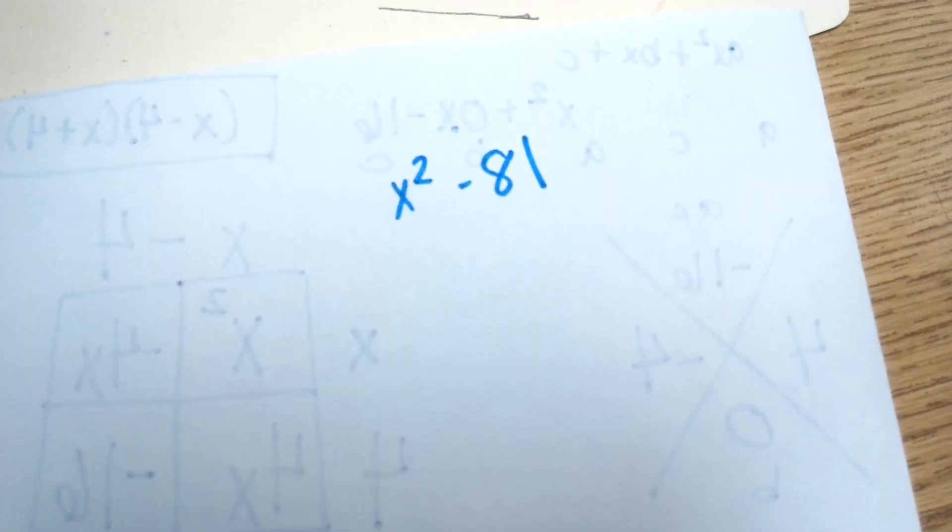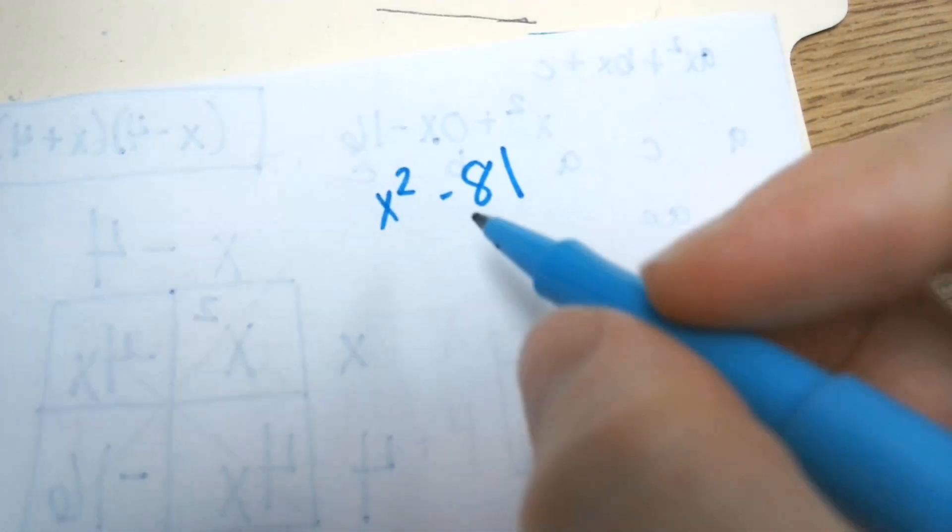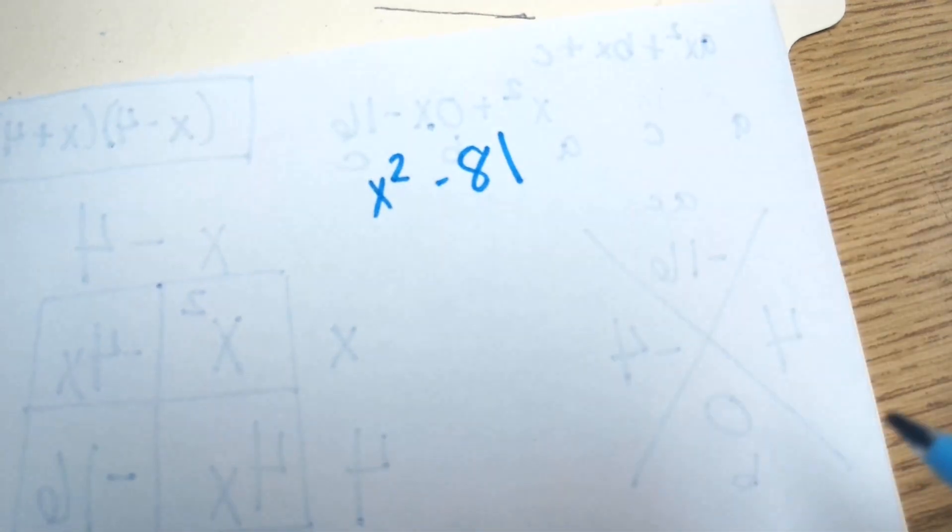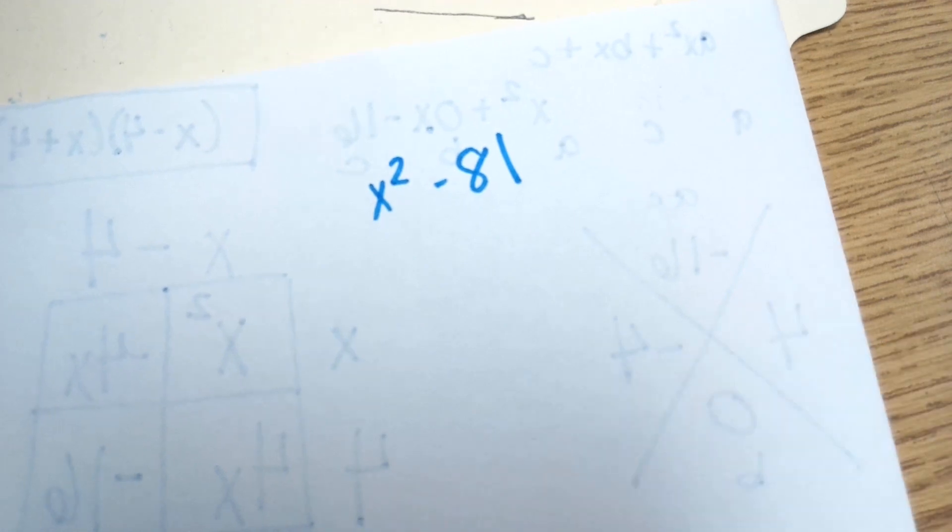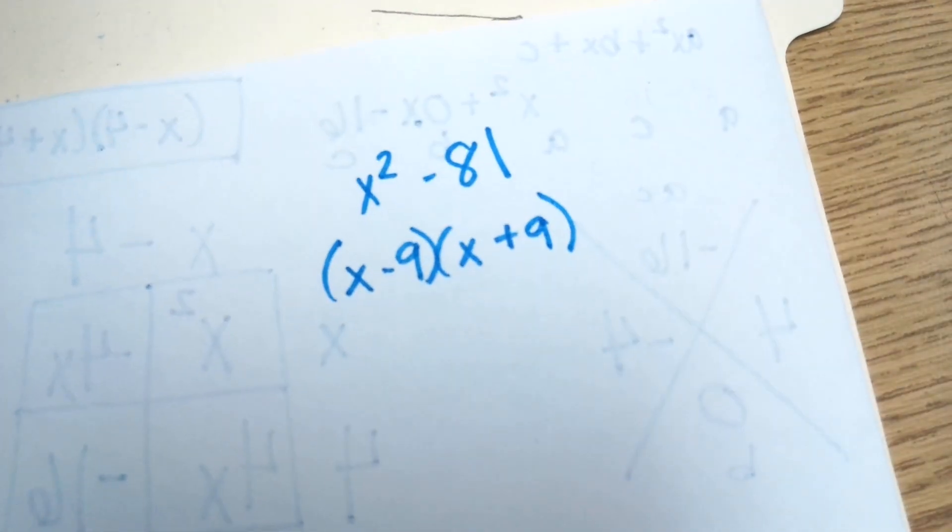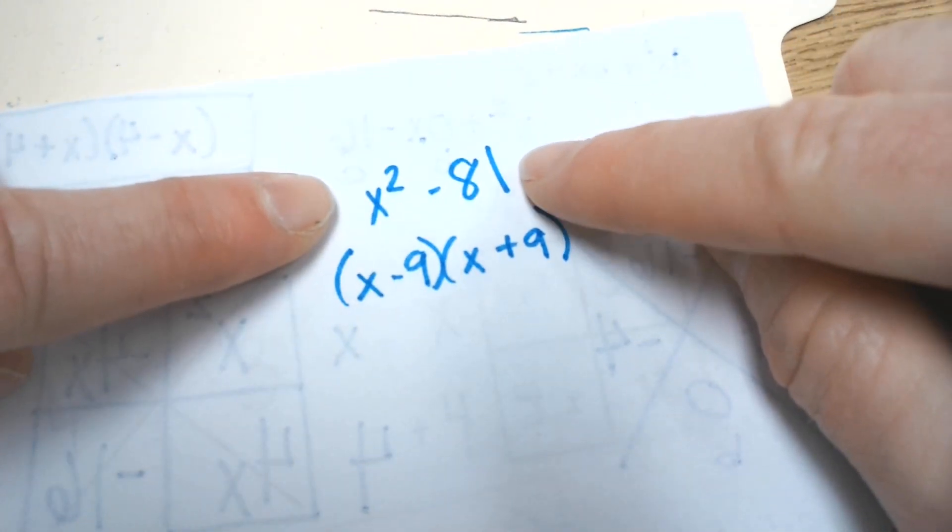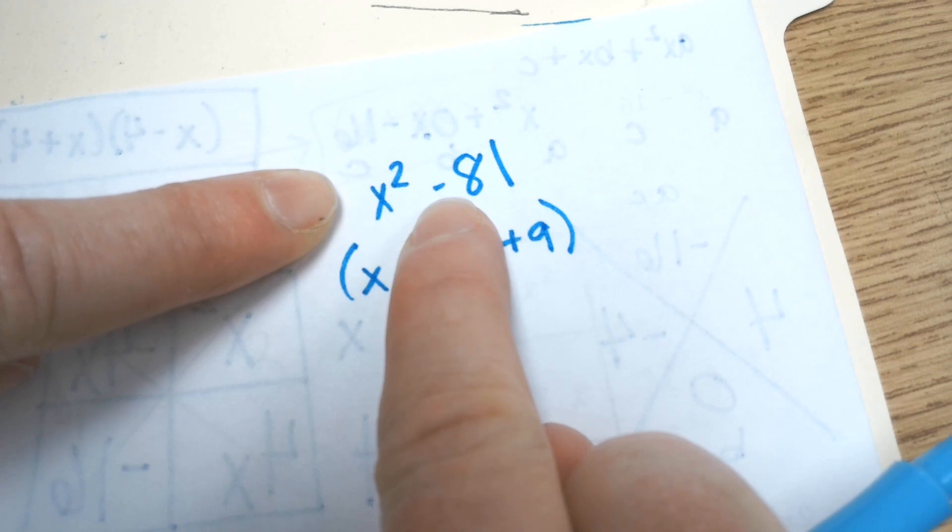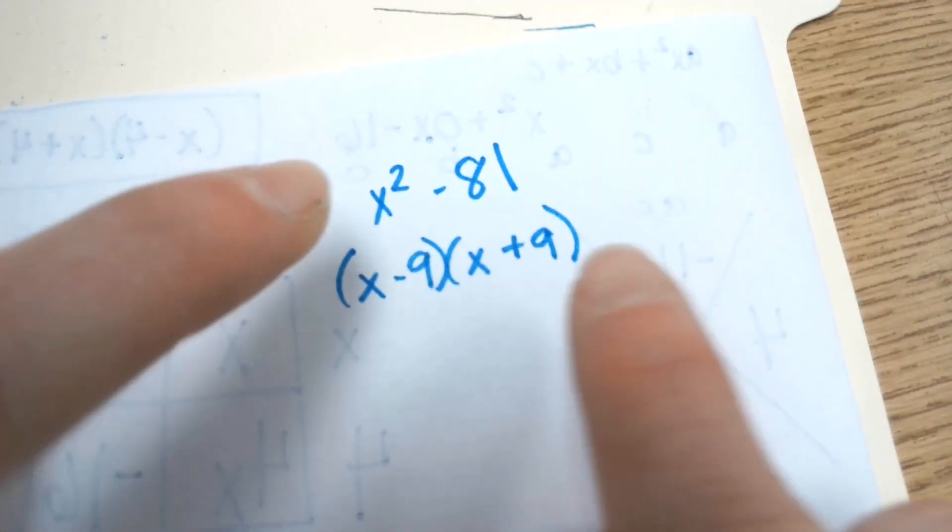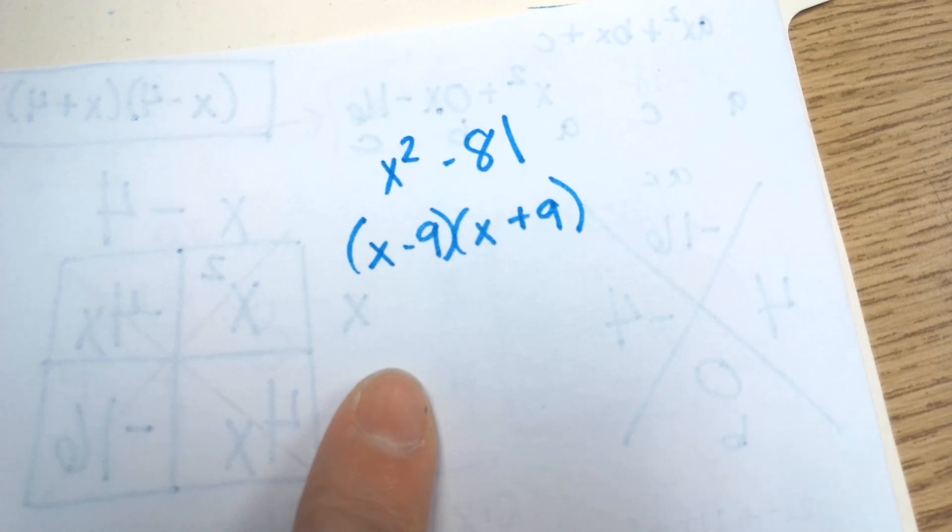x² - 81. See how there's no middle term? I look at what is the square root of 81? What times what gives me 81? 9. So I can easily just do this: (x - 9)(x + 9). These are called perfect squares. If you have the difference, see how that's subtraction, the difference of perfect squares, you can write them the same, but different signs. See, I have one negative, one positive. It works every time.